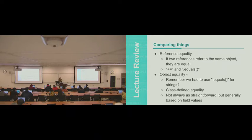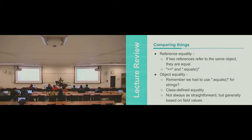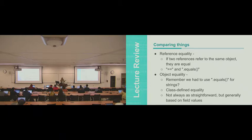Comparing things: we have reference equality - if two references are referring to the same object, they are equal. Then we have object equality - if you remember we had to use dot-equals for strings, it's class-defined equality. Depending on how complicated the objects are and what you consider equal, generally we'll base it on field values. So if you're comparing two people, you might check if their first name and last name are equal.